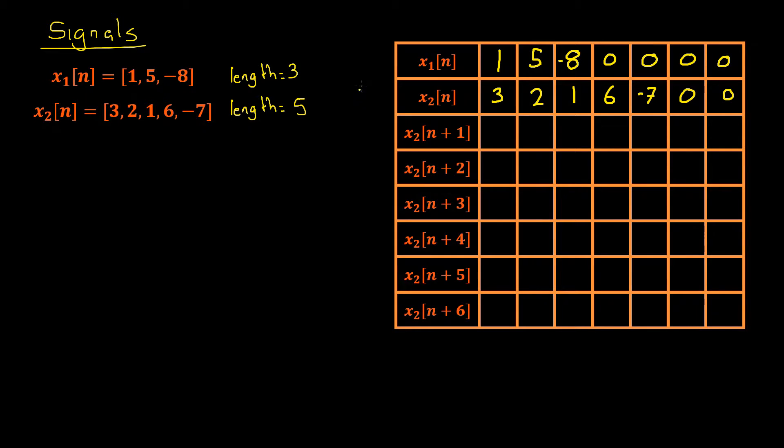Now when deciding the length of your correlation array, there's a simple formula: it's the length of your first array plus the length of your second array—3 and 5, which would be 8—minus 1.